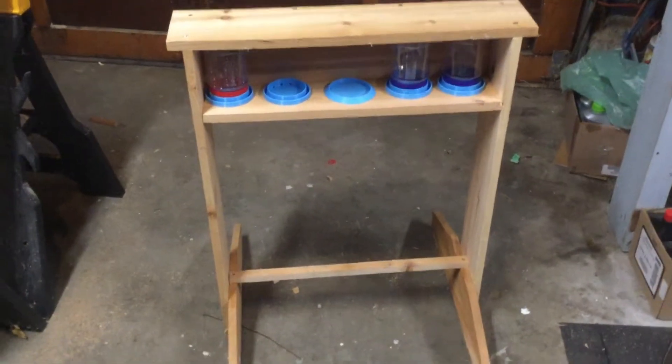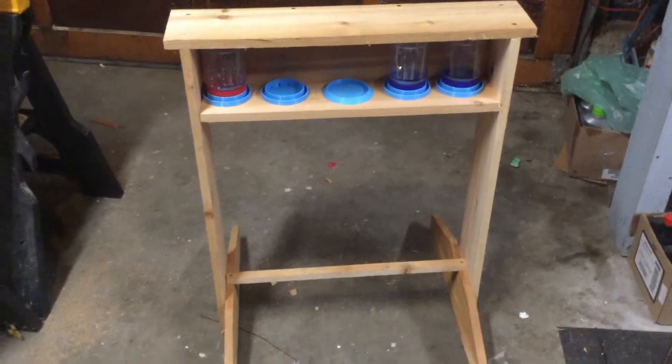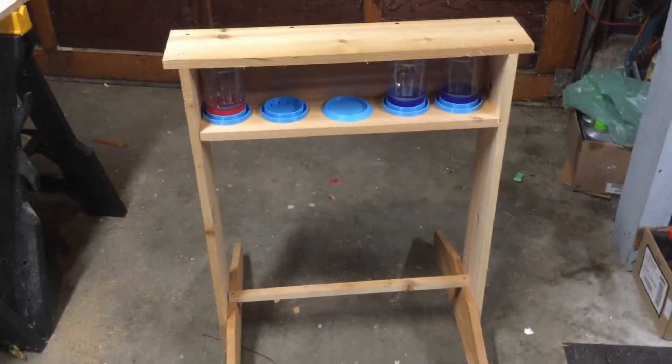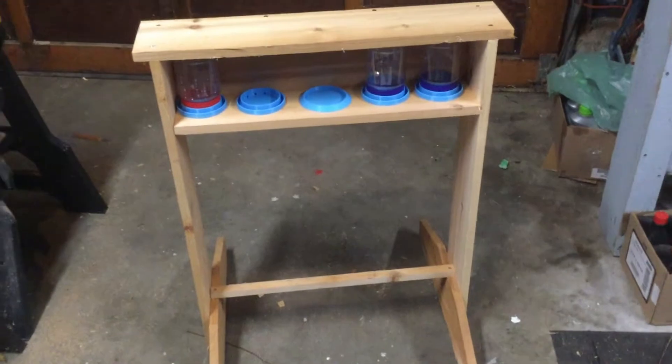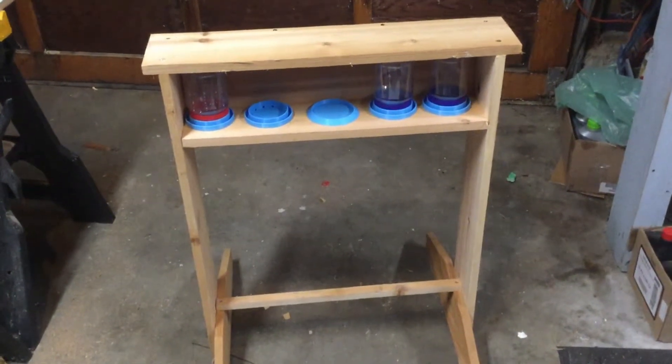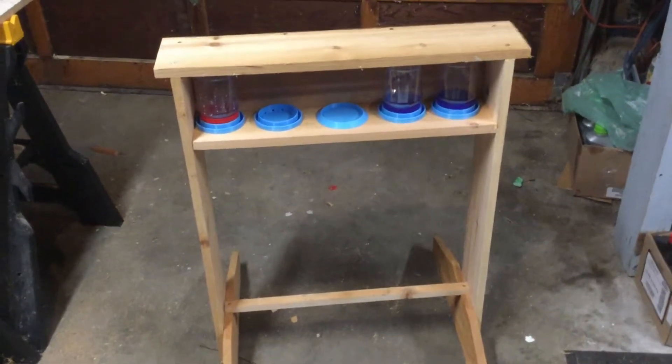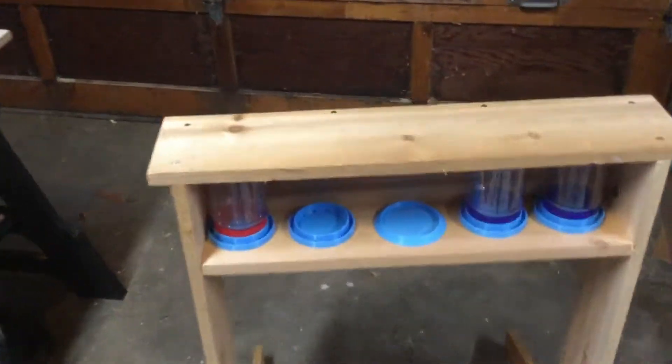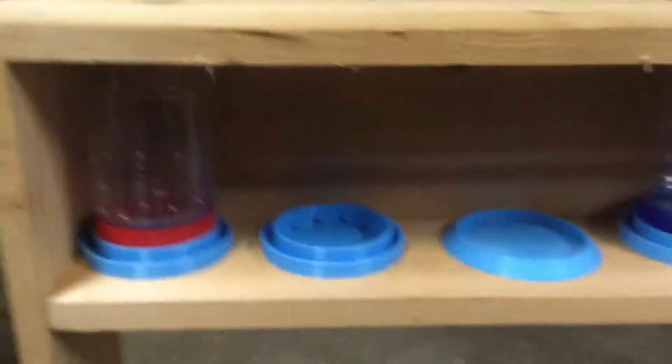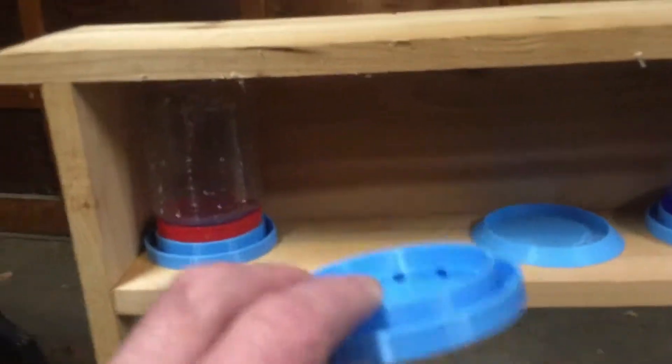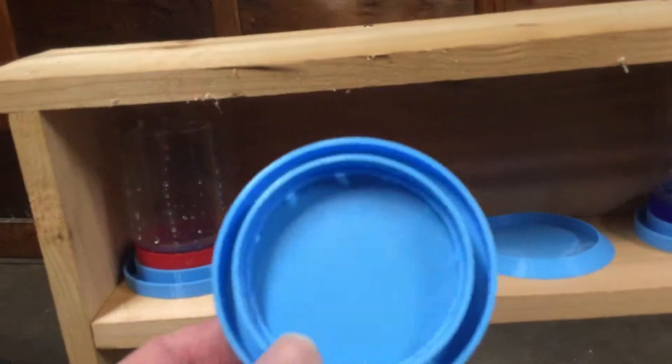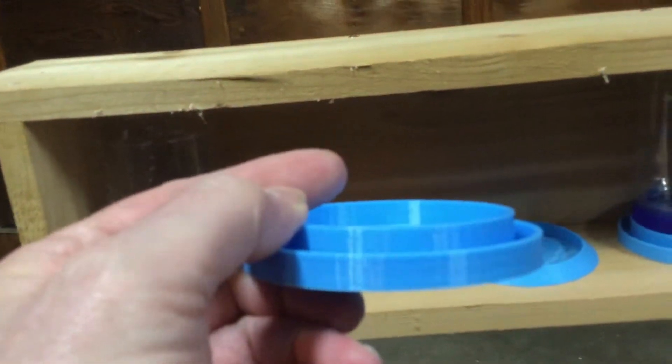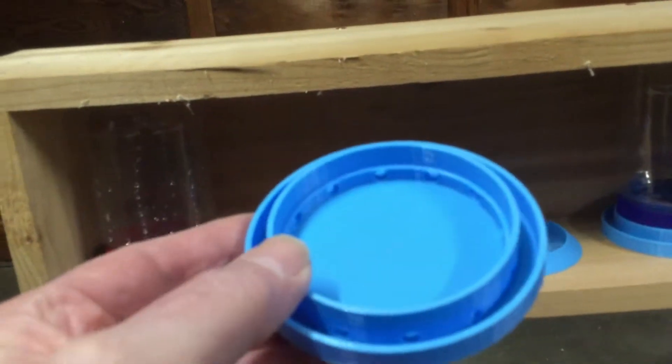So this is another project I've been working on. It's going to be a freestanding sugar water feeder for the bees. I had some spare pieces of cedar fence boards left over from a project last summer so what I did was I slapped together this little stand with a shelf and in the shelf I'm going to have four of these little feeder stations and this is something I designed in my 3D design application.